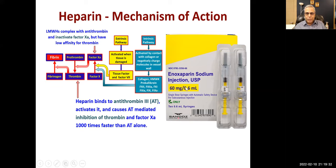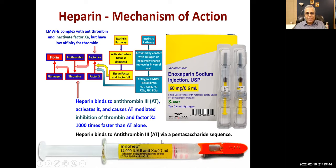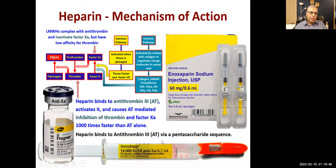Enoxaparin and tinzaparin are given subcutaneously. Deltaparin is a low molecular weight heparin given IV and subcutaneously. Heparin binds to antithrombin via a pentasaccharide sequence. Therapeutic uses: heparin and low molecular weight heparins limit the expansion of thrombi — they do not break down the thrombus, they prevent fibrin formation and limit expansion.